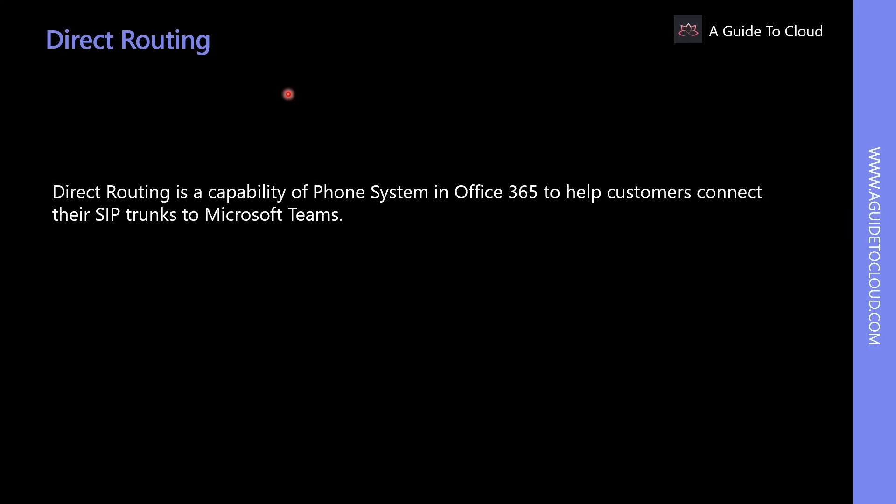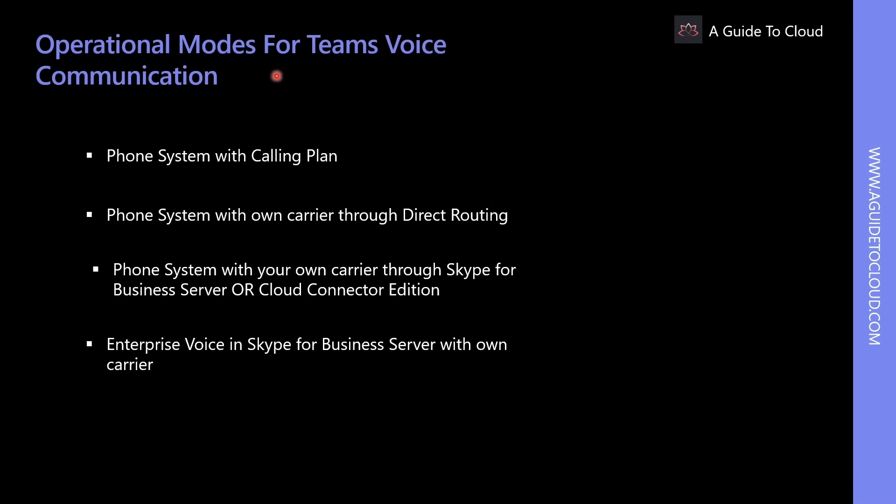Direct routing is a capability of Phone System in Office 365 to help customers connect their SIP trunks to Microsoft Teams. In the simplest deployment model, customers start with SIP trunks from their telecom provider, then configure a supported Session Border Controller (SBC) from one of Microsoft's certified partners, and finally connect the SBC to Microsoft Teams and Phone System.